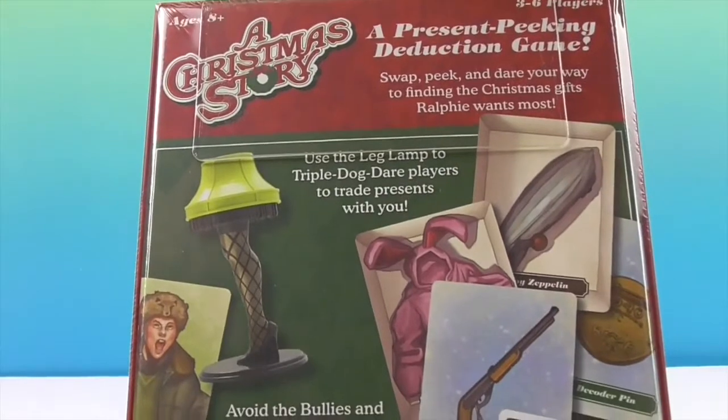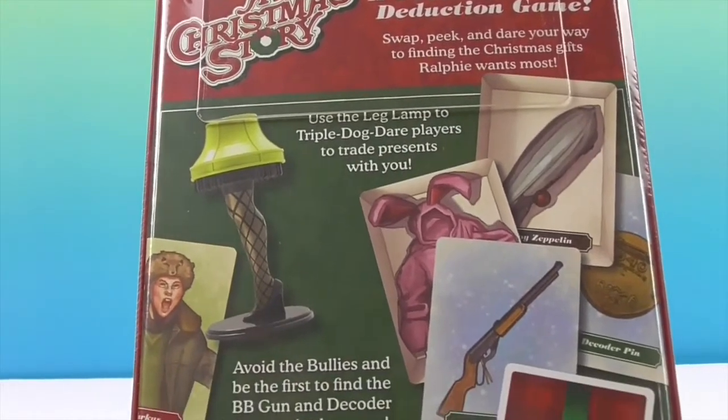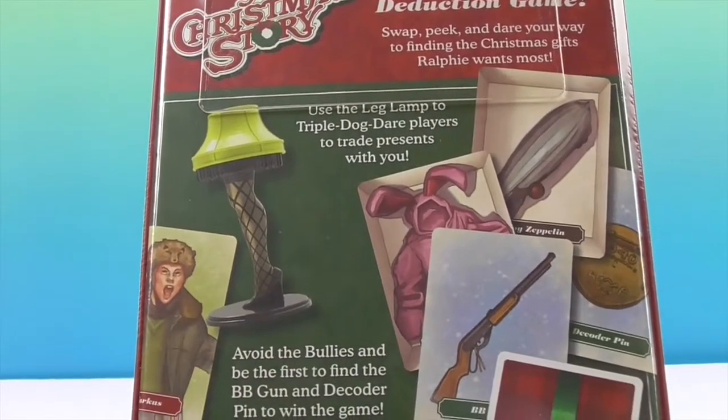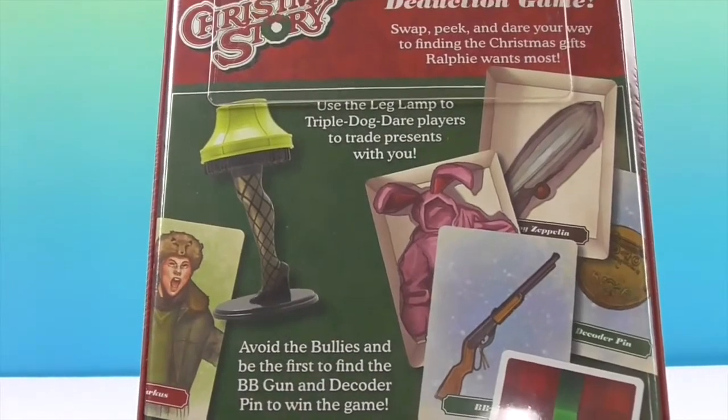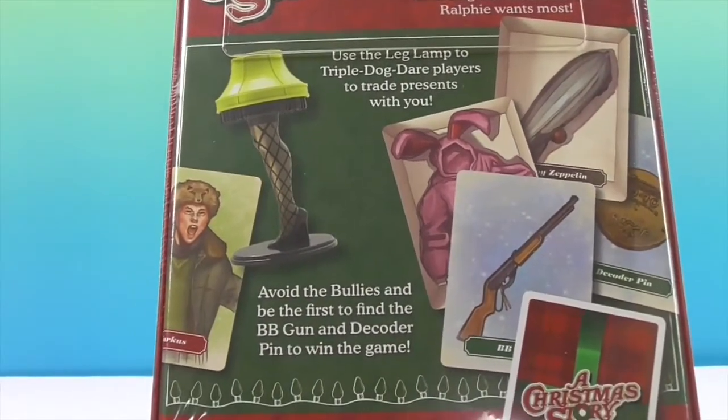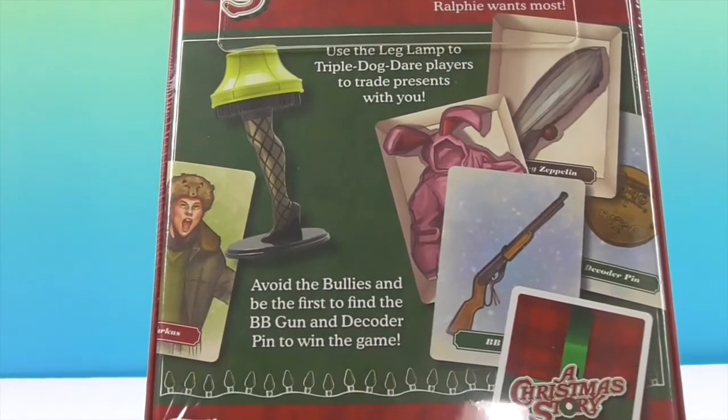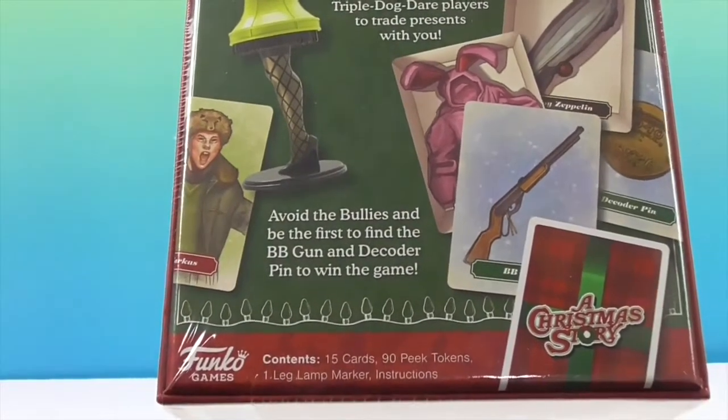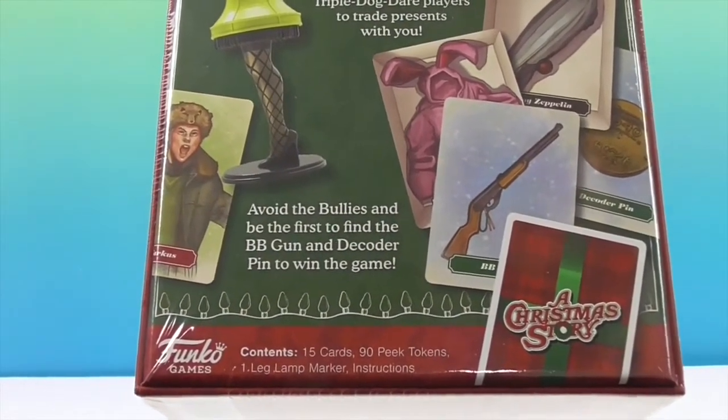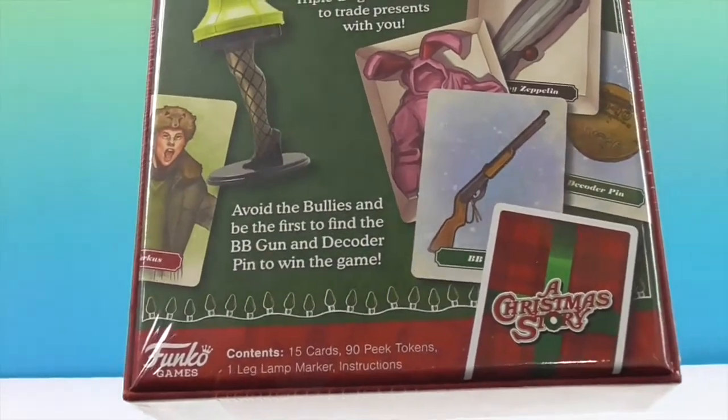It says a present peeking deduction game. Swap, peek, and dare your way to finding the Christmas gifts Ralphie wants most. Use the leg lamp to triple dog dare players to trade presents with you. Avoid the bullies and be the first to find the BB gun and decoder pin to win the game.